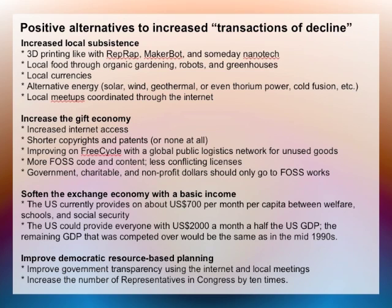There are also positive alternatives to increased transactions of decline. There can be increased local subsistence — like people printing their own things with 3D printers or growing local food with gardening robots — as well as local currencies, alternative energy, and local get-togethers. There can be an increased gift economy through more internet access, shorter copyrights and patents, or improving on free cycle with a global logistics network that ships unused goods to people. There can be more free and open source code. The exchange economy can be softened with a basic income so people get money even without working, and there can be improved democratic resource-based planning that truly meets people's needs.